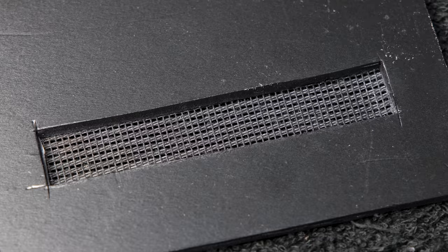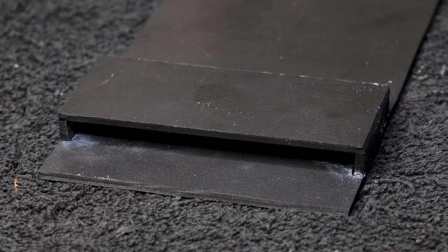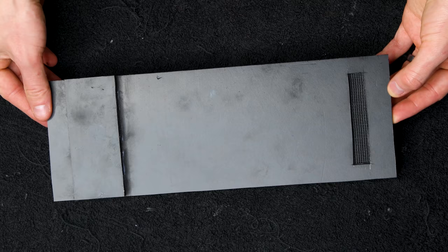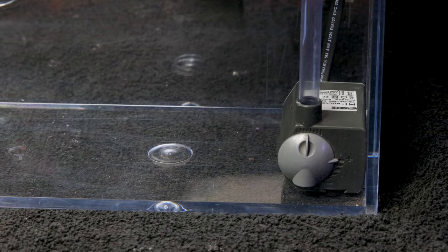The result is a barrier with a slot for water to pass through, and an overflow box. I'll secure this as far back into the container as possible, without obstructing the pump.